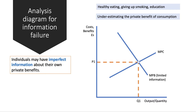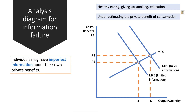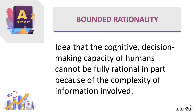In this situation, the choice you're making with limited information implies a lower level of demand than if you had better information. Fuller information would make you more willing and able to spend, so in this case the quantity would go up from Q1 to Q2.